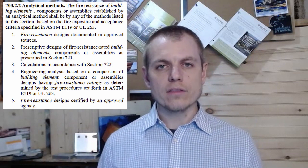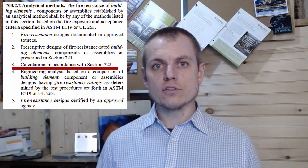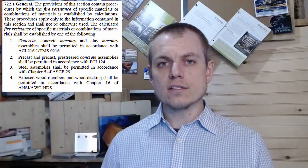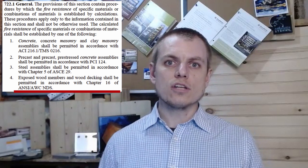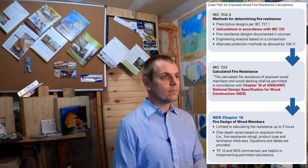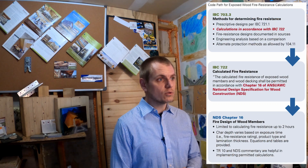If we turn to section 703 of the International Building Code, this shows us a number of valid methods of demonstrating fire resistance ratings of structural elements. One of those options is using calculations performed in accordance with section 722 of IBC. Section 722 states that we can demonstrate the fire resistance ratings of exposed wood members and decking by using chapter 16 of the NDS — the National Design Specification for Wood Construction — which provides an equation-based method for demonstrating fire resistance ratings of exposed wood members.